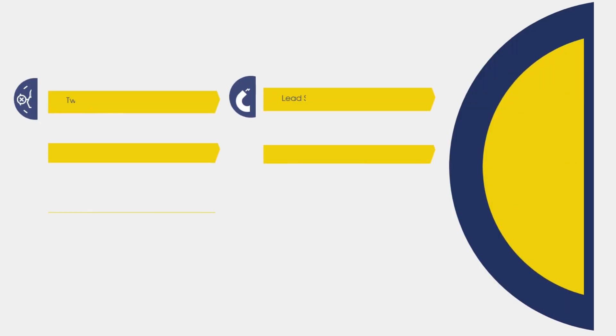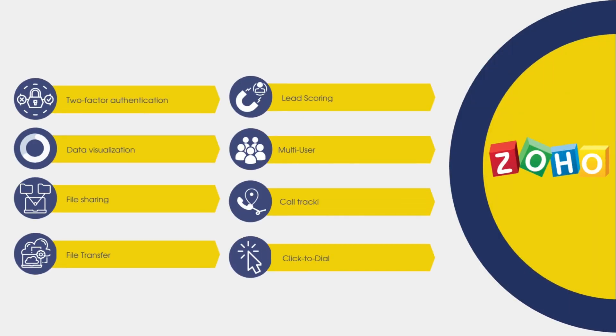In addition to those shared features, Zoho also provides some additional features that Odoo lacks. These include two-factor authentication, data visualization, file sharing and file transfer, lead scoring, multi-user support, and call tracking with click-to-dial.